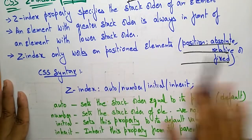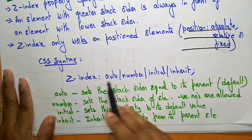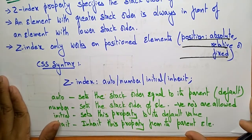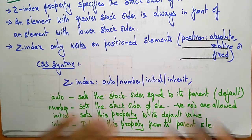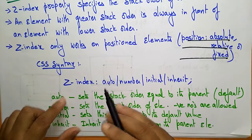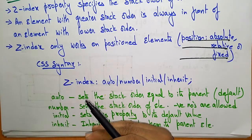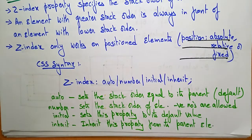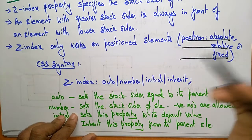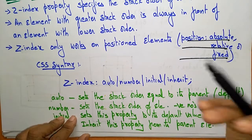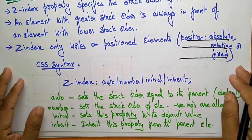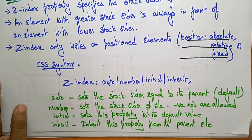The syntax for Z-index is: Z-index can take 'auto', which means the stack order equals that of its parent — it's the default. Next is 'number', which sets the stack order of the element. Whatever order you give, the elements will be placed in that order. It can also take negative numbers.